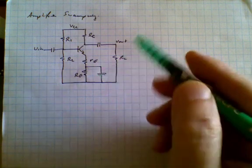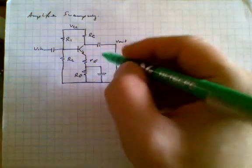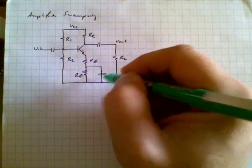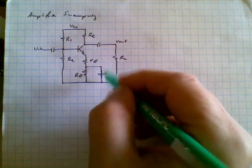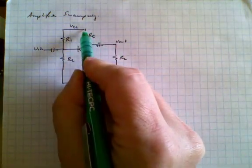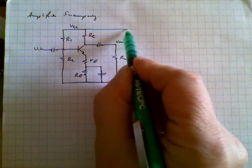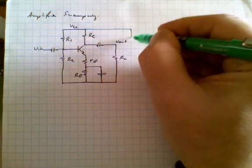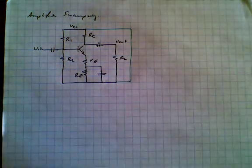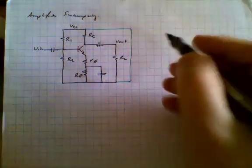So we're gonna redraw this as an AC equivalent circuit and observe what happens. This capacitor becomes shorted, this becomes shorted, and of course the supply voltage goes to zero.